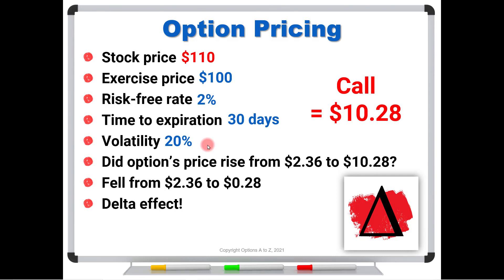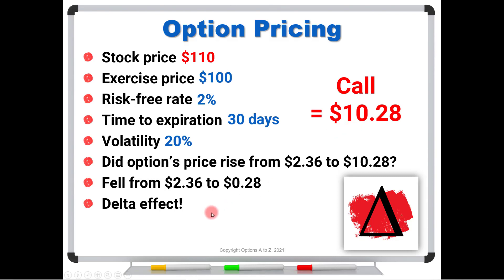What happened is that the value of the option fell because of the delta effect. In other words, because this option is now $10 in the money with only 30 days to go, there's a fairly slim chance it's going to fall out of the money so that the insurance value of the call can kick in. It's a pretty slim chance it will fall below $100. If it does, that was the insurance value we were paying — and it's fairly low at $0.28, because there's a low probability the stock will fall through the strike price in 30 days. What you're looking at here has nothing to do with the option effect — it was strictly a delta effect.